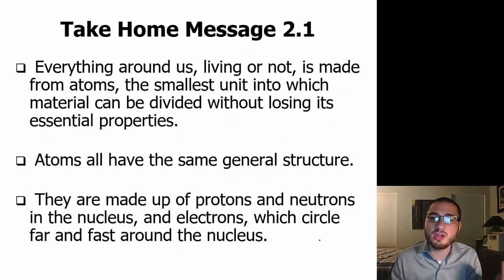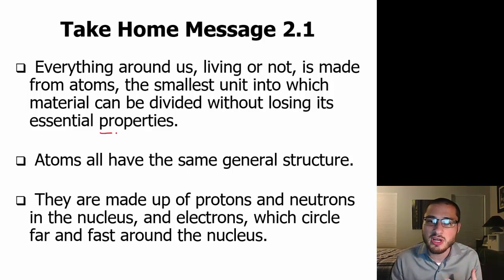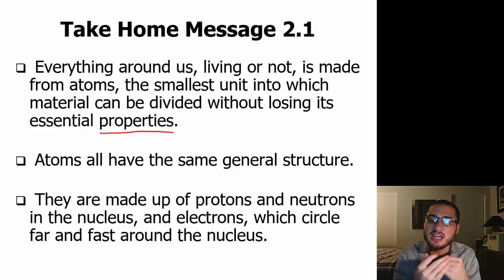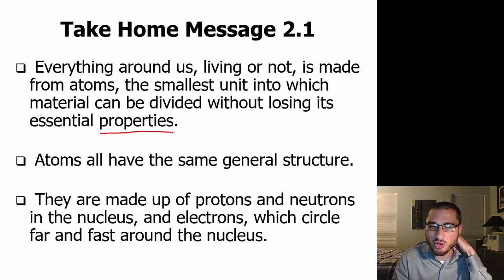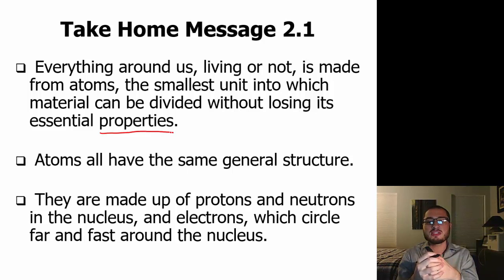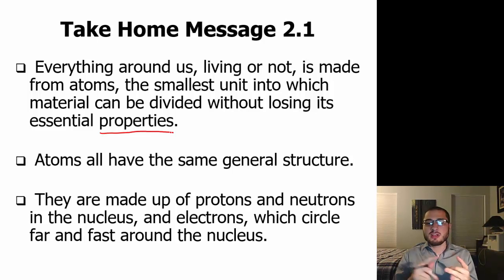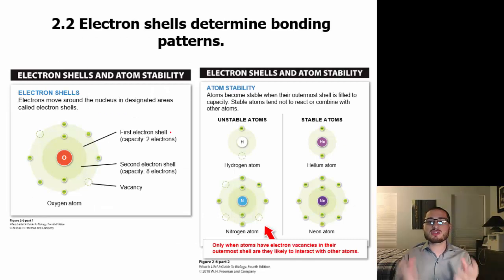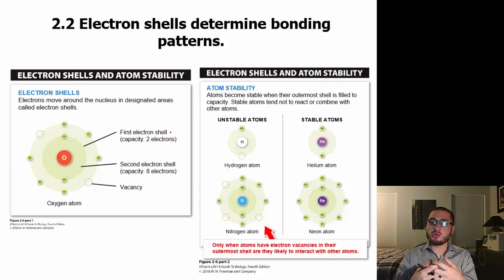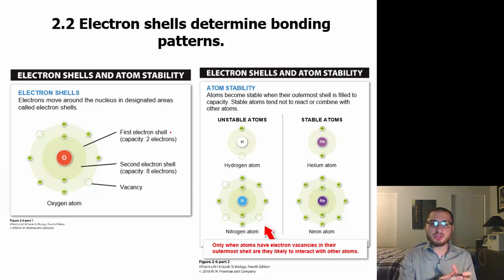Everything around us, living or not, is made up of atoms — the smallest unit into which material can be divided without losing its properties. There are smaller components than the atom, but they lose their property, so the smallest unit we can get while maintaining some type of properties is the atom. All atoms have the same general structure: protons and neutrons together in the nucleus, with electrons on the outside in the electron cloud. They're all made up of protons, neutrons, and electrons.